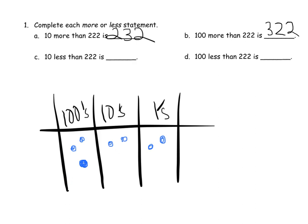If they struggle, however, point out this place value chart and that they can use this as a scaffold if necessary. So 10 less than 222 would mean we'd remove one from that column and we'd get 212. And 100 less would be 122.